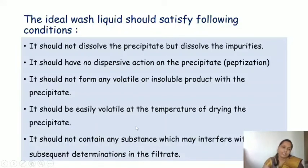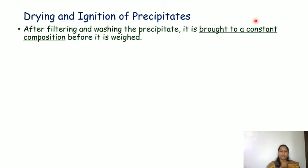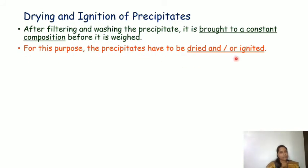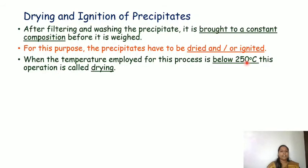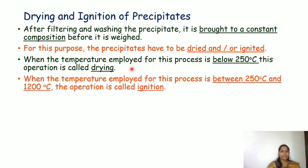After filtering and washing, the precipitate is brought to a constant composition before it is weighed. For this purpose, the precipitate is dried or ignited. When the temperature employed is below 250°C, the operation is called drying. When the temperature is between 250°C and 1200°C, the operation is called ignition.